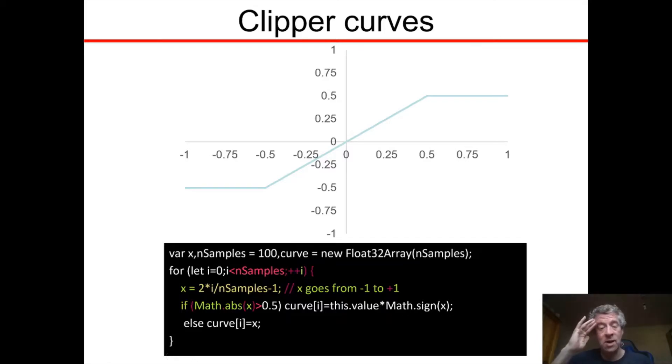But if we ignore that, we have 2 times number of samples over number of samples minus 1, so it's 2 minus 1 or just 1. Essentially for those samples, this x variable goes from -1 to 1, almost 1, in equally spaced values.